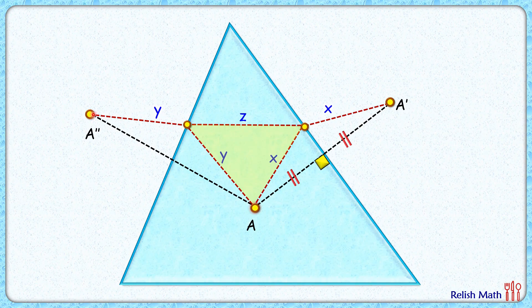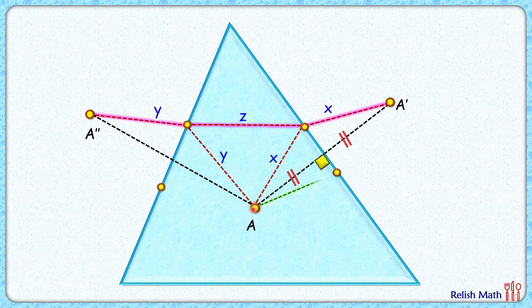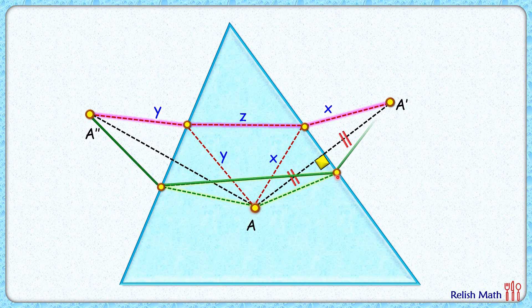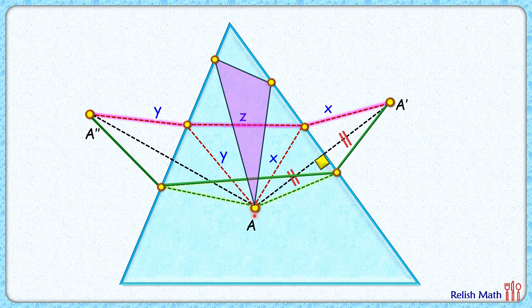The key insight is that the perimeter of the inscribed triangle equals the total path distance from A'' to A' via the two side points. This holds for any inscribed triangle — for the green triangle, the perimeter equals the path from A'' to A' through its two vertices. For yet another triangle formed with points higher on the sides, its perimeter equals the path from A'' along the side to that vertex and then to A'.